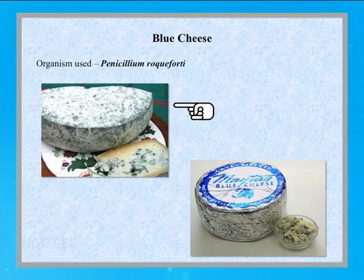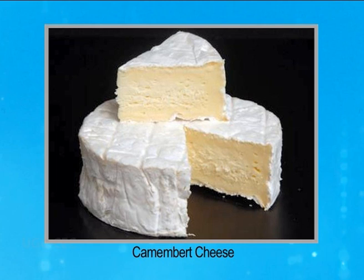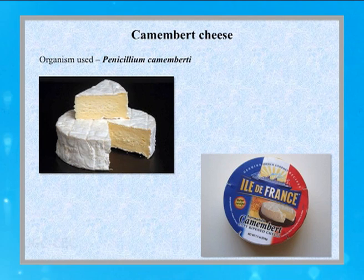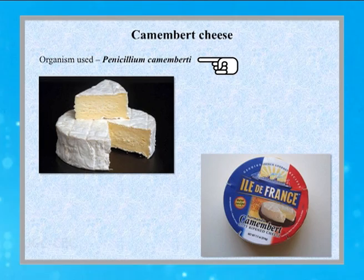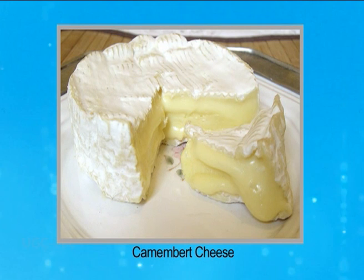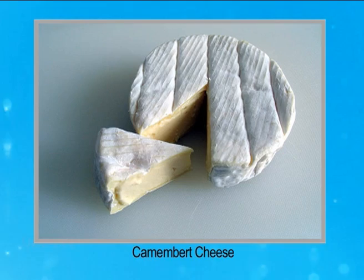Another type of cheese is Camembert cheese, which is ripened with the help of a species of penicillium called Penicillium camembertii. The difference from Roquefort cheese is that here the penicillium does not grow deep inside the cheese — rather it grows on the surface only, giving a white or creamy color appearance rather than blue or green. This cheese is known as Camembert cheese.